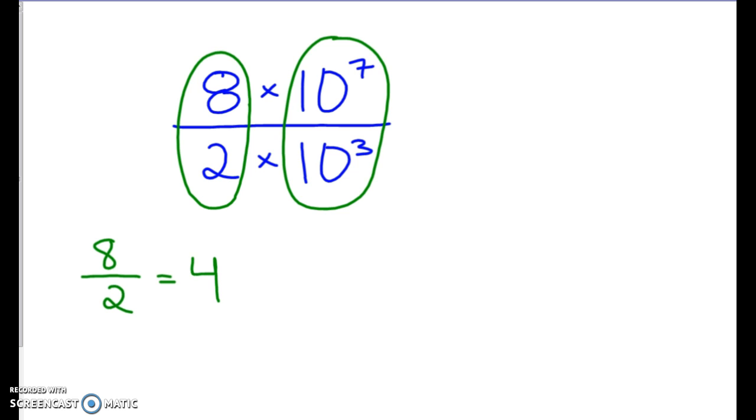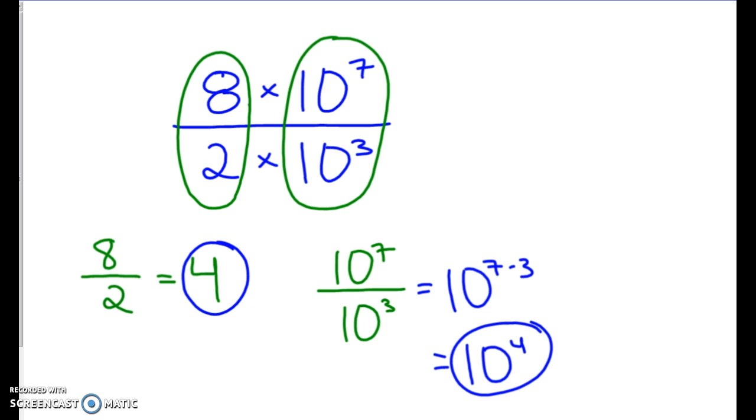And then we are also going to do 10 to the 7th divided by 10 to the 3rd. And we have a property, our division property, that when our bases are the same and we're dividing, then we subtract those exponents. So we have a base of 10 and then 7 minus 3. So that ends up being 10 to the 4th power. And we got 4 over here. And all we have to do is then put them together and multiply.